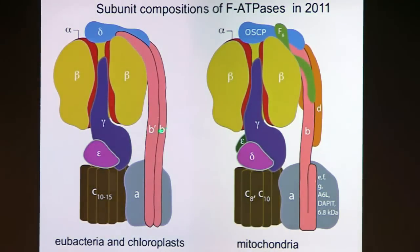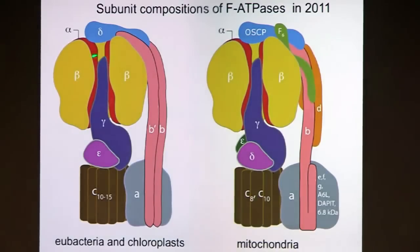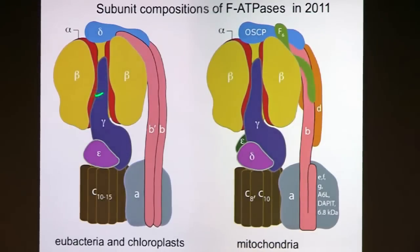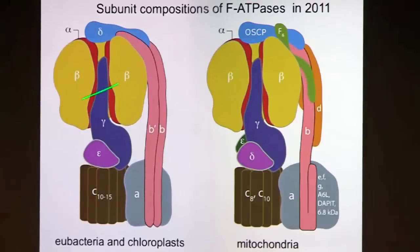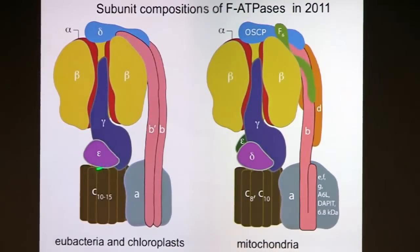The catalytic knob is shown here, with part of the structure removed to reveal the rotor in the middle. Substrates bind in three catalytic sites in this region, and ATP molecules are generated there. We now know that this central part rotates and is attached to a ring of proteins in the membrane made of C subunits.